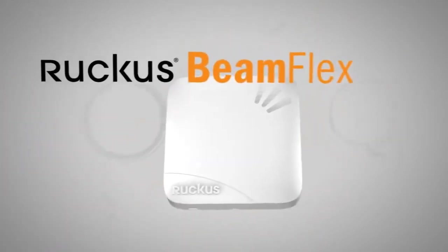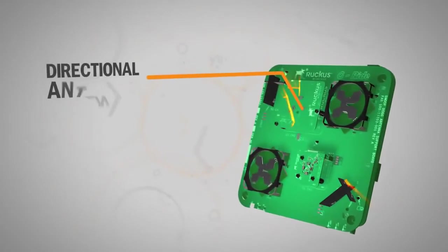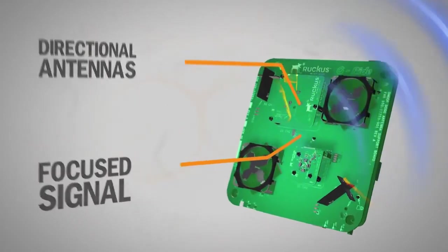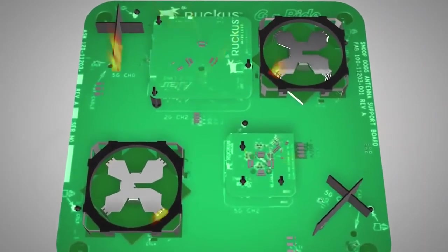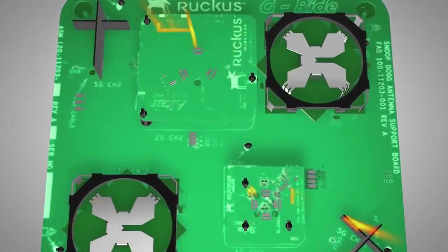Here's how it works. Through patented technology, BeamFlex automatically creates a directional Wi-Fi signal on the fly for every client. It does this by activating combinations of individual antenna elements, each working in concert to create the best possible signal path that yields the highest data rate.